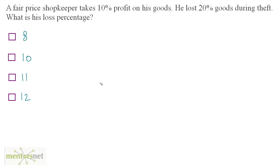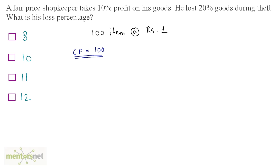A fair price shopkeeper takes 10% profit on his goods. He lost 20% of goods during theft. What is his loss percentage? Let us assume this shopkeeper has 100 items bought at the rate of 1 rupee per item, so cost price equals 100 rupees. He lost 20% of goods during theft, meaning 20 items were stolen, leaving 80 items.